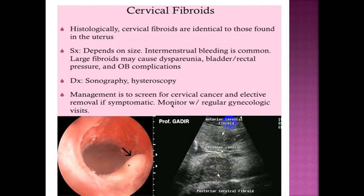Cervical fibroids: histologically, cervical fibroids are identical to those found in the uterus. Intermittent bleeding is common depending on size. Large fibroids may cause dyspareunia, bladder and rectal pressure, and obstetrical complications. Diagnosis is by sonography and hysteroscopy. Management is to screen for cervical cancer and elective removal if symptomatic, monitored with regular gynecological visits.